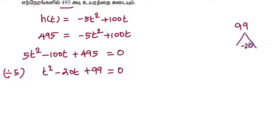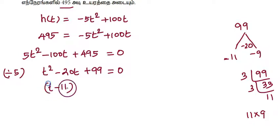Now for 99, the product is 99 and the sum is -20. 99 = 3 × 33 = 11 × 9. So -11 and -9 give us -20. We have to factor: (t - 11)(t - 9) = 0.